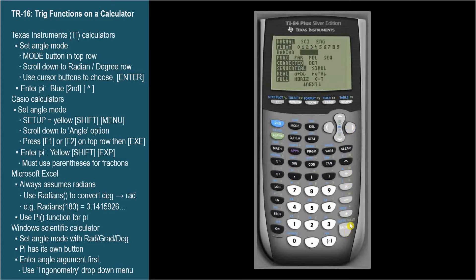To find sine of 30 degrees, press the sine button. The calculator displays the function name with the left parenthesis for us. We type 30 and close the parenthesis. Enter.